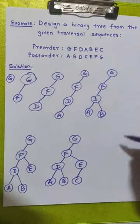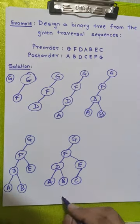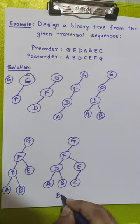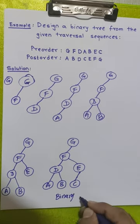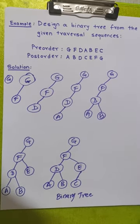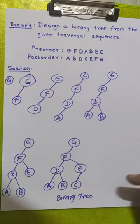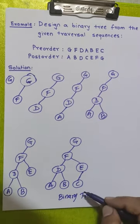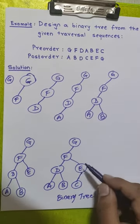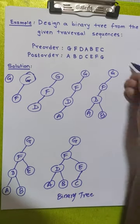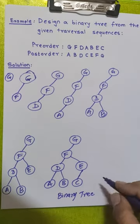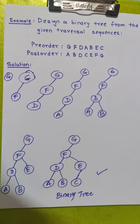We have now placed all the elements in the binary tree, reaching the final step of our design. This is our final binary tree. To verify whether it is correct, we will traverse the entire tree in pre-order and then post-order fashion. If we get the same sequences as given, then our designed binary tree is correct; otherwise it is wrong.